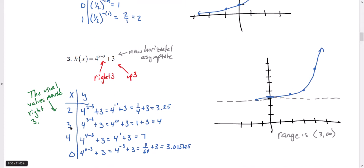Put x value of 3. 3 minus 3 is 0. 4 to the 0 is 1. 1 plus 3 is 4. My second point. Put in 4 for x. 4 minus 3 is 1. 4 to the first power is 4. 4 plus 3 is 7.